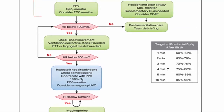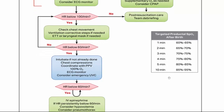Regarding targeted pre-ductal SpO2, remember the newborn is transitioning into life outside the womb, so it takes time for circulation to improve. At one minute, pre-ductal SpO2 is 60 to 65%. At five minutes, we're still at 80 to 85%. It's not until 10 minutes post-delivery that we start seeing what we might consider normal SpO2 levels.